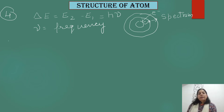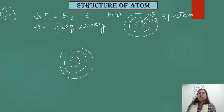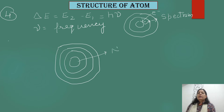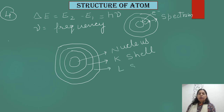These are some of the postulates given by Bohr. If we draw the atomic model given by Niels Bohr, at the center of the atom is the nucleus. The first shell is the K shell, the second is the L shell, and the third is the M shell, and so on. We can label the diagram accordingly: nucleus at center, then K, L, and M shells surrounding it.